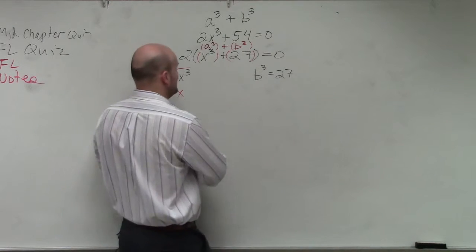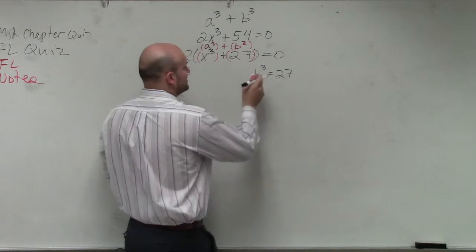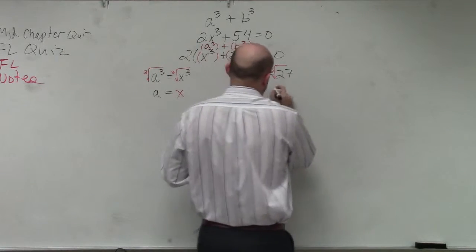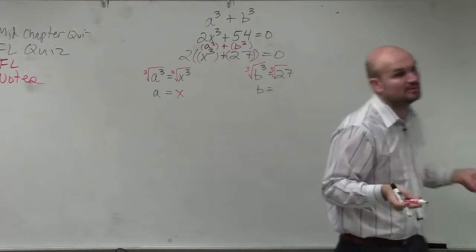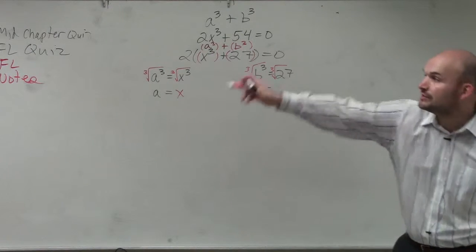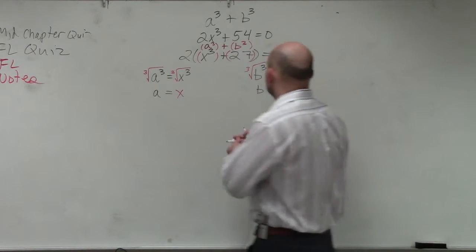Now to figure out what b is, I'm going to do the same thing. I'm going to take the cube root of both sides. And therefore, the cube root is what number multiplied by itself 3 times gives you 27. 3 times 3 times 3. You guys can even see it's up there. So that gives you 3.